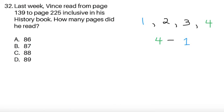Item 32, last week Vince read from page 139 to page 225 inclusive, meaning 139 to 225. So in his history book, how many pages did he read?